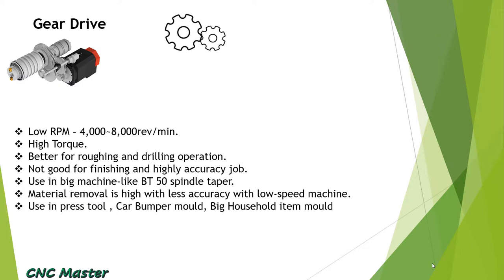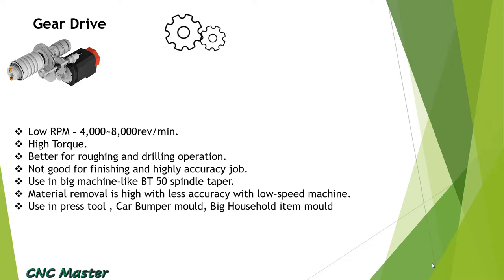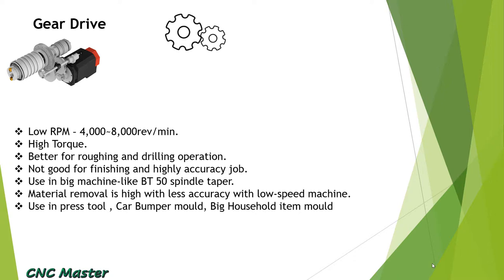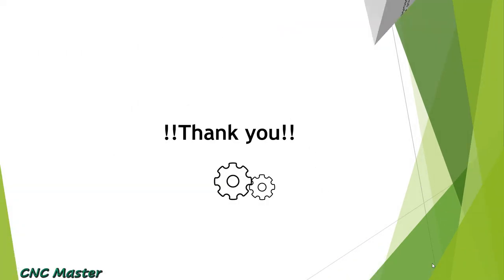Gear drive: it is called a gear drive spindle because the spindle motor and spindle are connected with the help of gears. The RPM range is from 4000 to 8000. It is a very high torque drive, better for roughing and drilling operations. It is used in big machines like BT40 and BT50 taper. The material removal rate is very high.